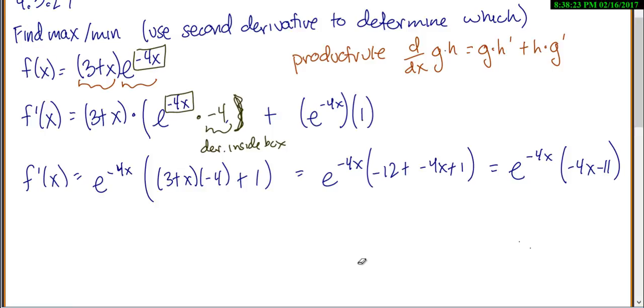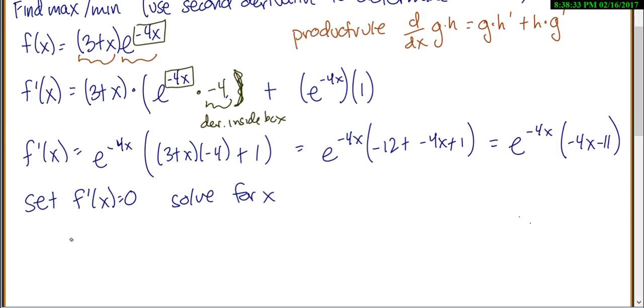Okay, now, anytime you're looking for a maximum, you set the derivative, the first derivative, equal to 0 and solve for x. So we'll set e to the negative 4x times negative 4x minus 11 equal to 0.